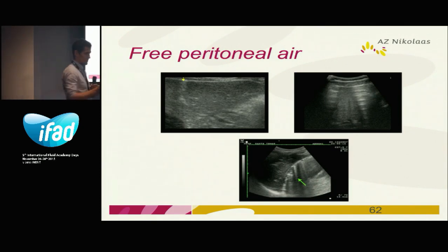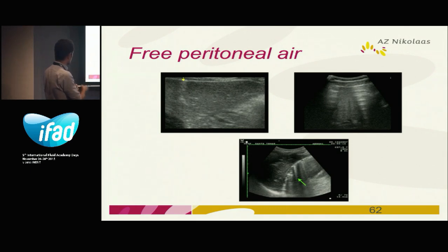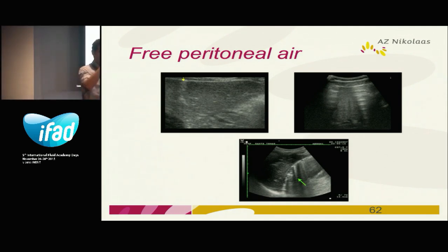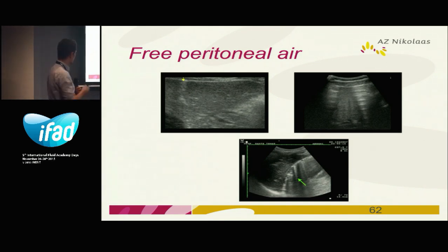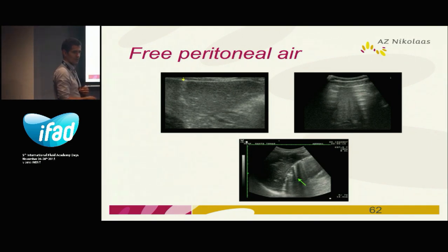This is very important — with ultrasound, which I think we're not always aware of and don't use often enough, we can perfectly diagnose free air. This is the liver, and if you see hyperechoic lesions on top of the liver, we know it's free air. Very importantly, stones have a very clear shadow, but air has a very dirty shadow — it shatters and moves up and down. Here again, on top of the liver we see air. This was a patient with perforation of a gastric ulcer, and here we have free air between the liver and the stomach.